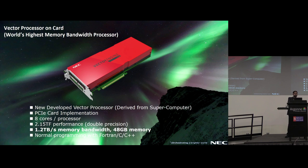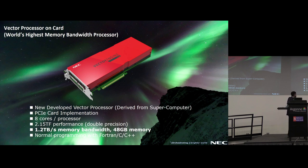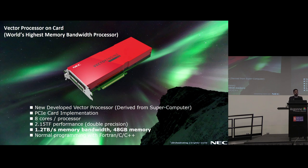We come in the PCIe form factor. This vector processor has eight cores per chip, with 2.15 teraflops of double precision performance, and a massive high memory bandwidth of 1.2 terabytes per second, along with 48 gigabytes on chip. You can compare it with GPUs and CPUs in terms of numbers, but the architecture is pure vector.